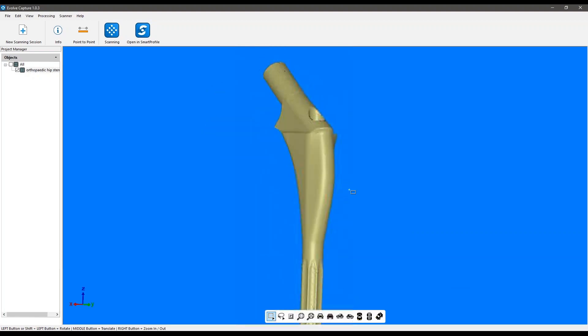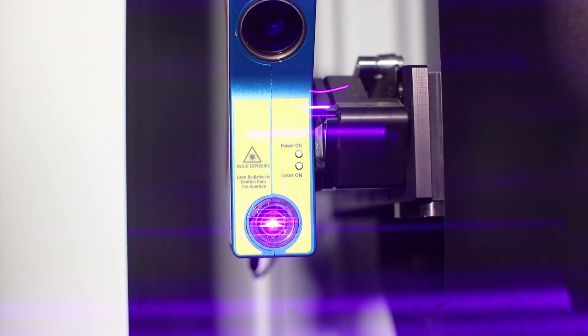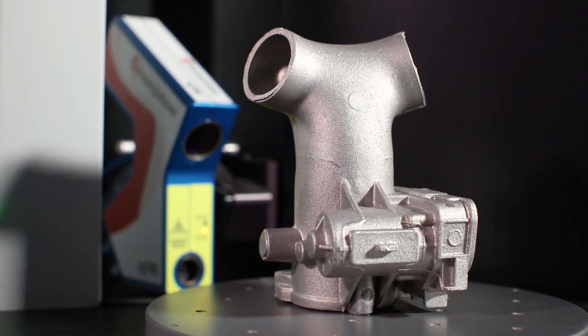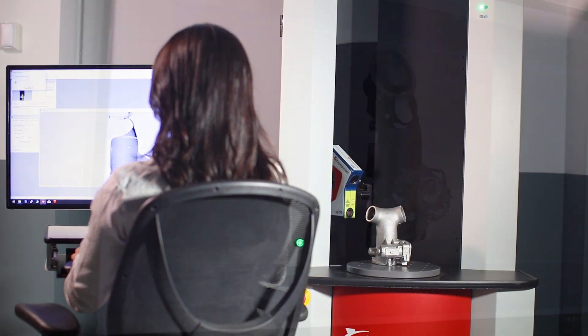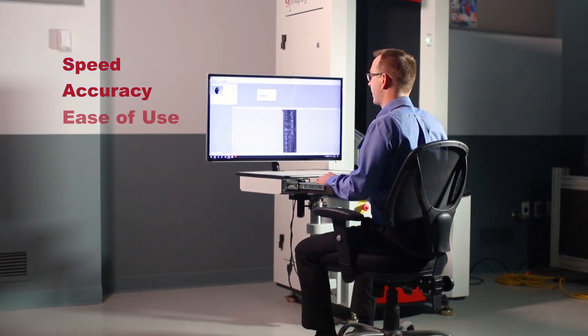The AI620 goes beyond typical 3D scanners, which are intended for modeling or reverse engineering. The AI620 is designed for metrology, engineered for speed, accuracy and ease of use.